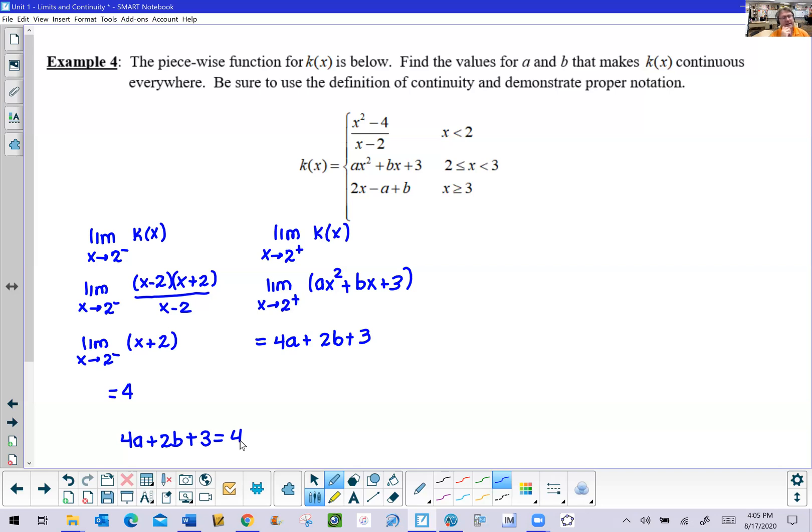But the problem is we can't do anything about this fact. It is a single equation with two unknowns and we don't really work with those very well in algebra. So let's kind of put that off to the side and let's focus on this idea of the 3. Let's find the limit as x approaches 3 from the left of our k of x and compare that with the limit as x approaches 3 from the right of this k of x.